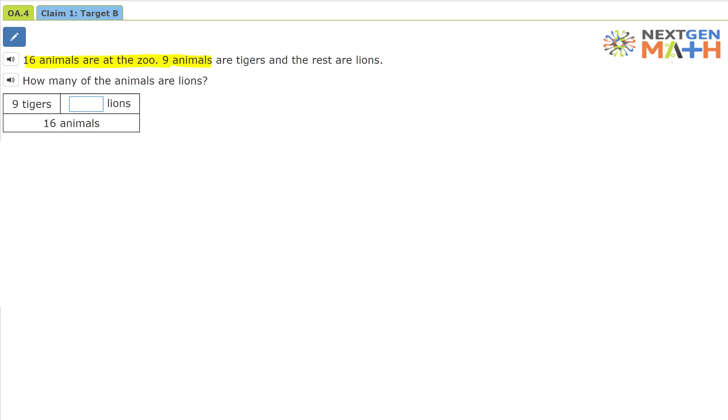16 animals are at the zoo, 9 animals are tigers, and the rest are lions. How many of the animals are lions?